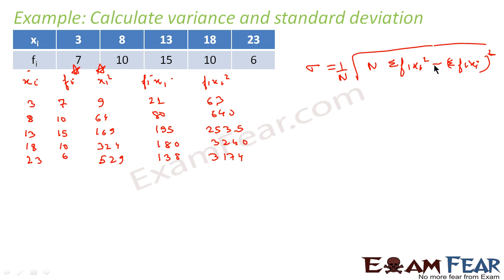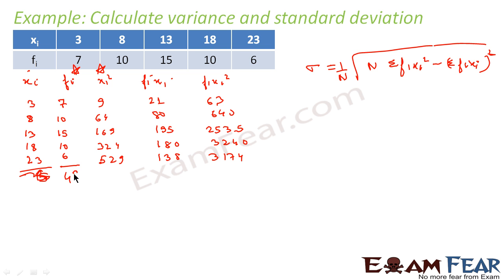Now we find n by adding up the frequencies: 7 plus 10 plus 15 plus 10 plus 6. That gives us n equals 48.